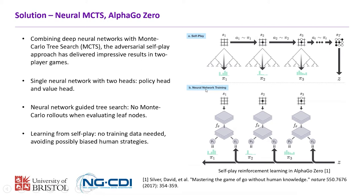The neural network has two heads: one for the policy and another for the value. Neural MCTS is a Monte Carlo tree search guided by the neural network — when we meet new leaf nodes, we don't do Monte Carlo rollouts; instead we run the neural network to estimate its value and policy. Learning from self-play means we don't need pre-collected training data; the data is generated by running this game repeatedly.